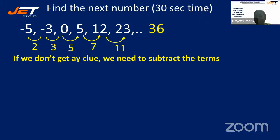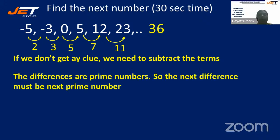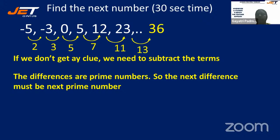The differences are prime numbers: 2, 3, 5, 7, 11. So the next difference must be the next prime number, which is 13. Therefore, 23+13 gives us 36. That is why the answer is 36.